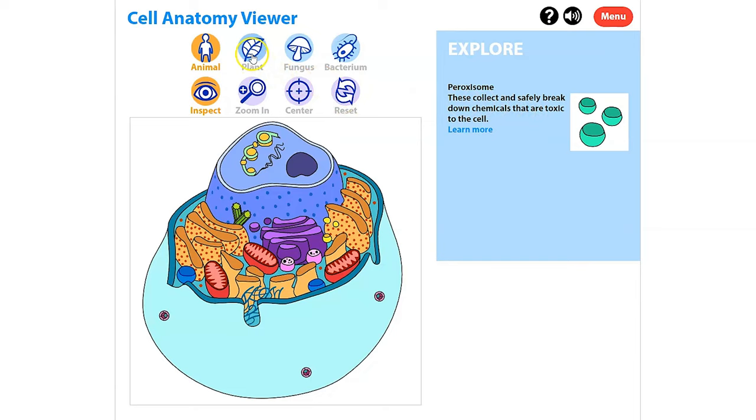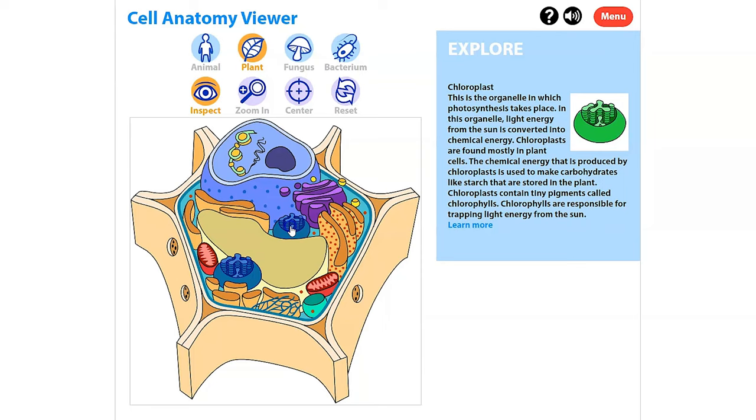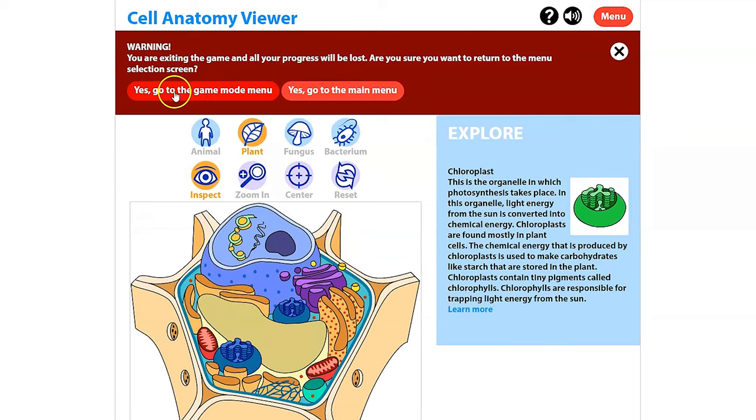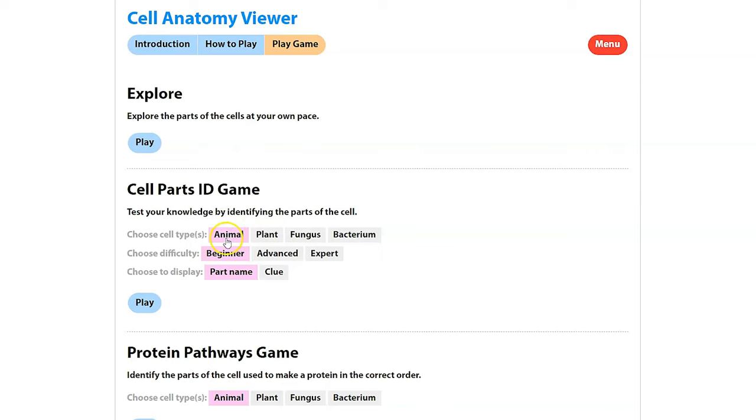If you didn't want to do animal, I can switch to plant. And you'll see that, for example, if I click here, there is another green organelle. In this case, it's the chloroplast. The chloroplast is where plants are able to do their photosynthesis. Let's go back to the main menu and go to game mode.